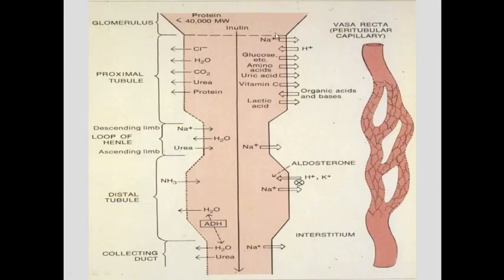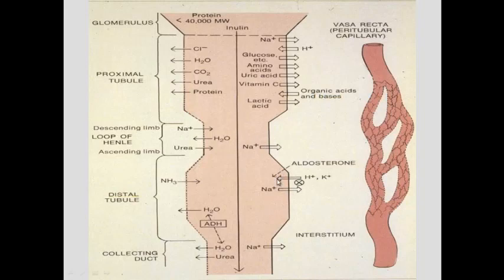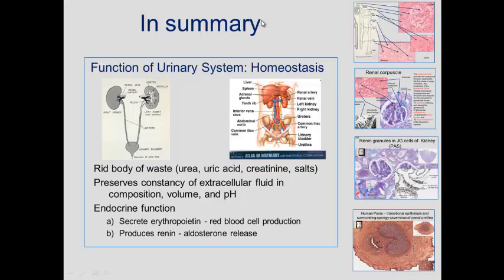In the proximal tubule you reabsorb the salt, water, and 85% of the protein. The loop of Henle is where you set up a concentration gradient that you can then utilize with aldosterone and ADH to concentrate the urine, removing 99% of the 180 liters of fluid that was filtered out of the glomerulus.